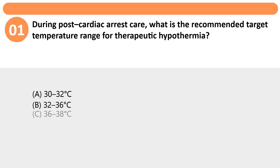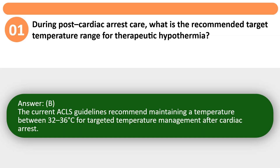During post-cardiac arrest care, what is the recommended target temperature range for therapeutic hypothermia? A. 30-32 degrees Celsius. B. 32-36 degrees Celsius. C. 36-38 degrees Celsius. D. 38-40 degrees Celsius. Answer: B. The current ACLS guidelines recommend maintaining a temperature between 32-36 degrees Celsius for targeted temperature management after cardiac arrest.